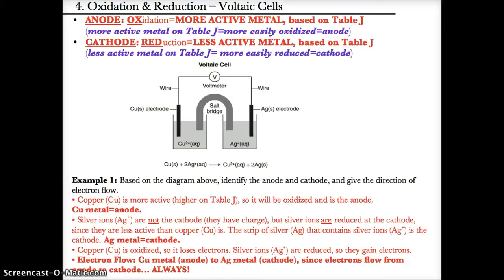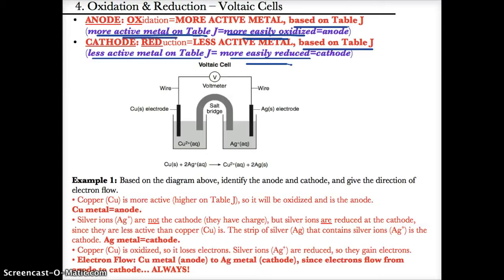To determine which is the anode and cathode without looking at a reaction, use Table J. The more active metal will be more easily oxidized, and based on 'anox,' that's where the anode is. The less active metal will be more easily reduced, and based on 'red cat,' that's where the cathode is.